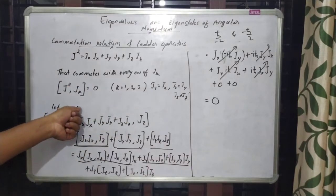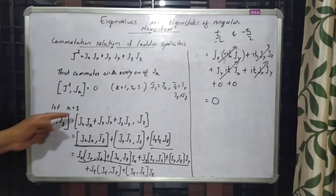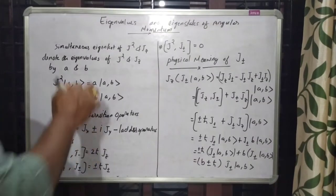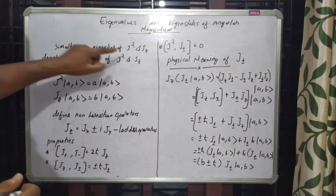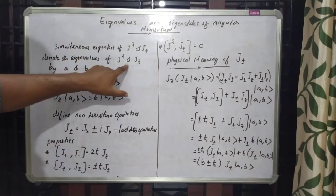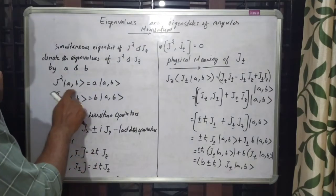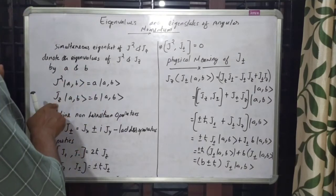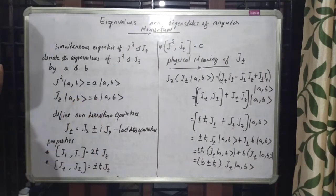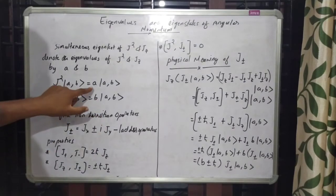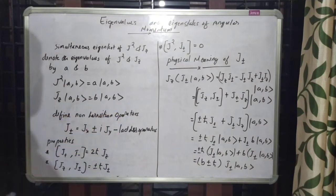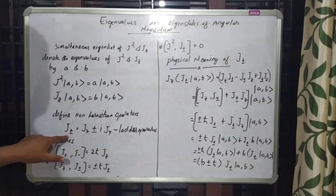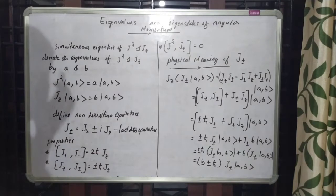We can take k = 2 and k = 1 and get the same answer. Now we are looking for the simultaneous eigenkets of J² and Jz, and we denote the eigenvalues of J² and Jz by a and b. This means if we operate with J² we get eigenvalue a, and if we operate with Jz we get eigenvalue b.